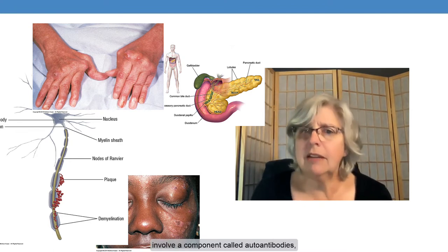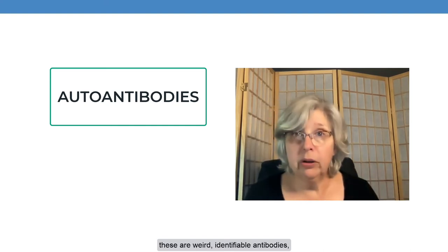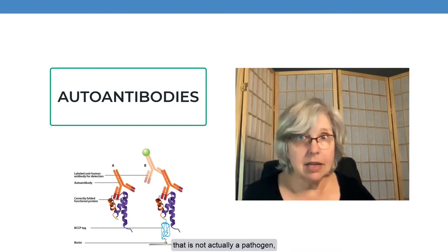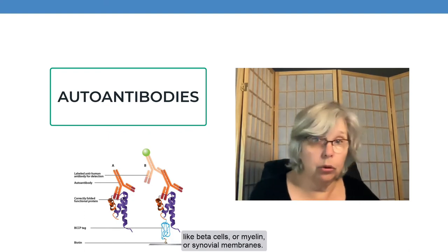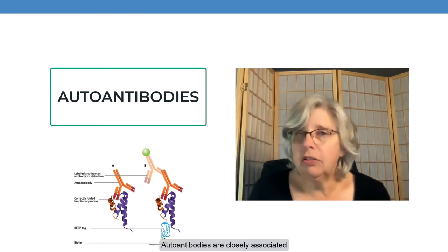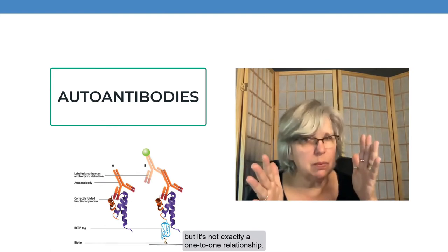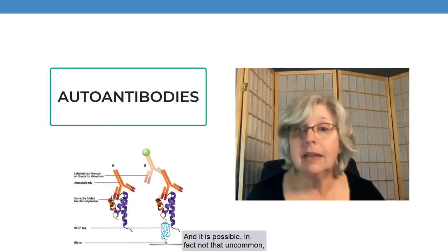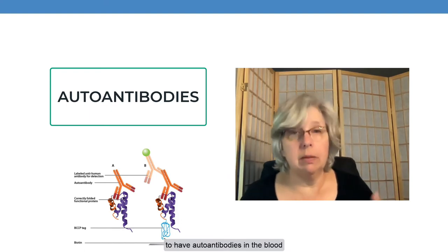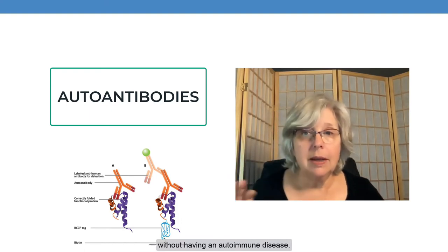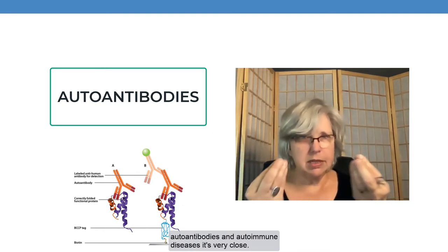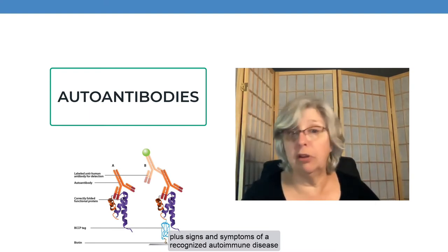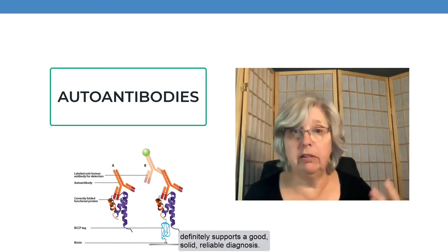An immune system attack against the insulin-producing beta cells of the pancreas is type 1 diabetes. Many autoimmune diseases involve a component called autoantibodies — these are identifiable antibodies produced by activated B-cells that attack some target that is not actually a pathogen, like beta cells, or myelin, or synovial membranes. Autoantibodies are closely associated with autoimmune diseases, but it's not exactly a one-to-one relationship. It is possible, though not typical, to have an autoimmune disease and not have autoantibodies in the blood. And it is possible — in fact, not that uncommon — to have autoantibodies in the blood without having an autoimmune disease. But having both a positive blood test for autoantibodies plus signs and symptoms of a recognized autoimmune disease definitely supports a good, solid, reliable diagnosis.